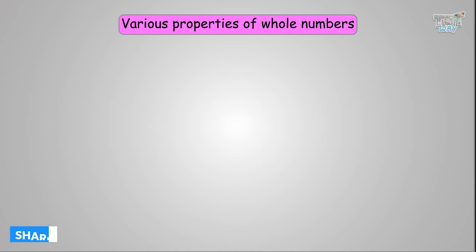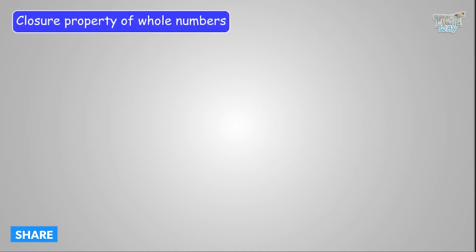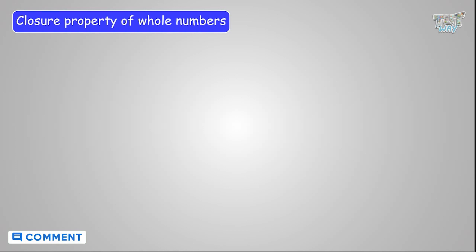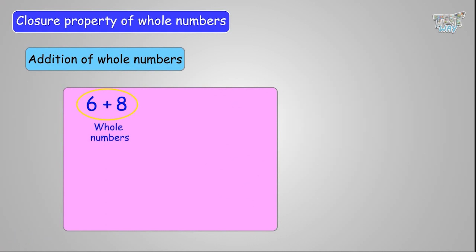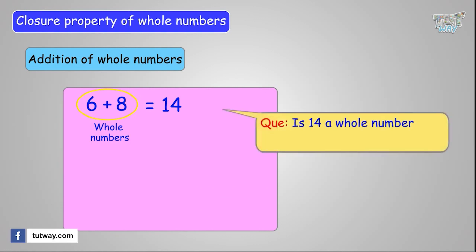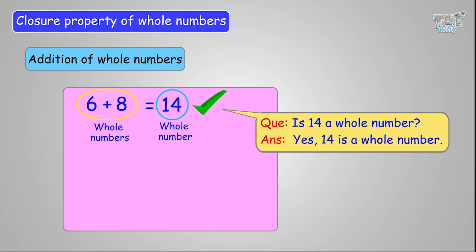The first property is known as closure property. Take any two whole numbers — for example, 6 and 8. Add them; the answer is 14. Is 14 a whole number? Yes, 14 is a whole number.